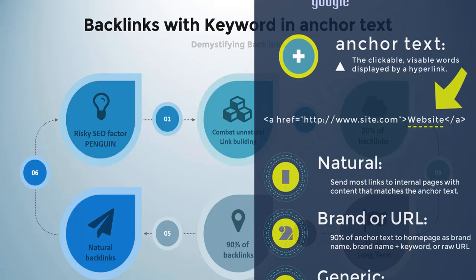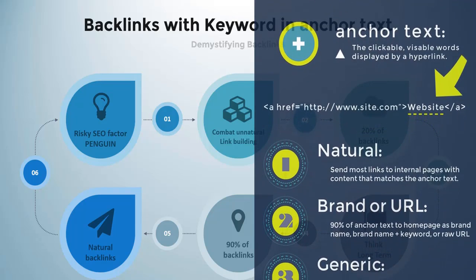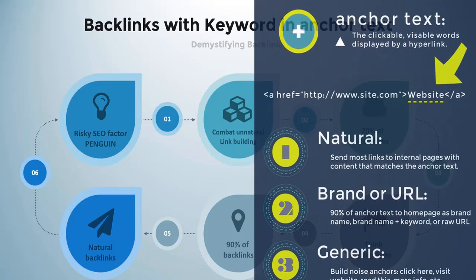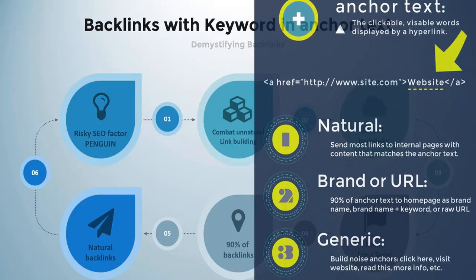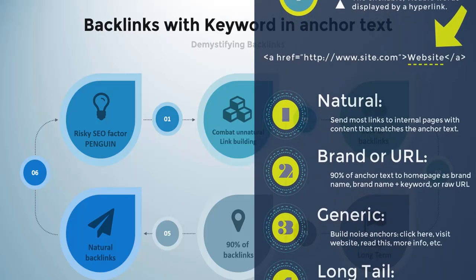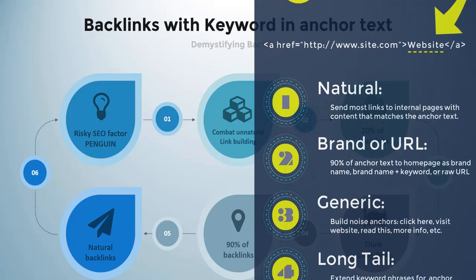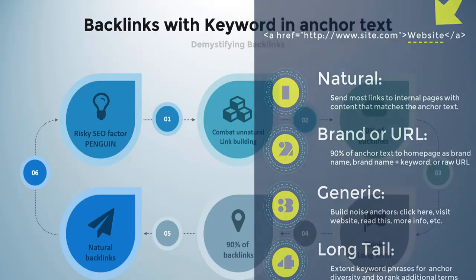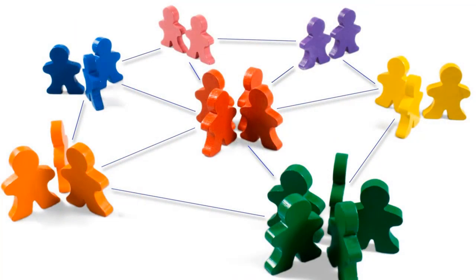On the other side, domain name or brand name in anchor text is increasing every year. The main reason is that brand and URL links are natural, whereas keyword links are not in most cases. In the current world, people just share the URL of the homepage or interior page directly — they don't spend time writing HTML tags with attributes and anchor words.